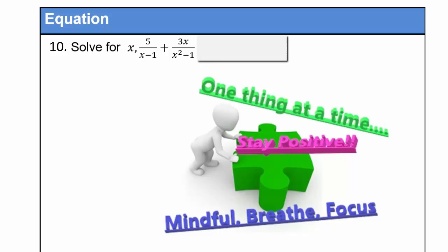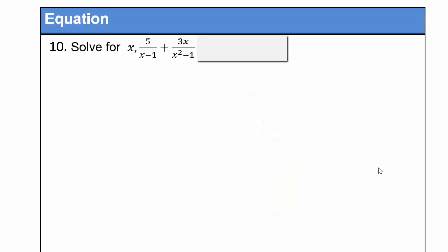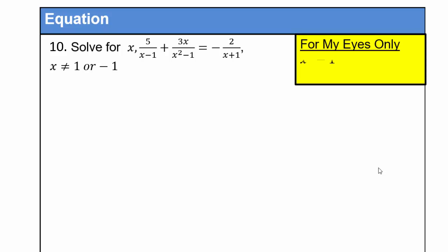You can hide part of the problem and just look at what's left — you know how to do that. You need to factor the denominator: x squared minus 1 is a difference of squares, so it factors as x minus 1 times x plus 1. That means x cannot be 1 or negative 1 because those give zero in the denominator. We need to make common denominators, and the least common multiple is x minus 1 times x plus 1, so go ahead and do that on both sides.